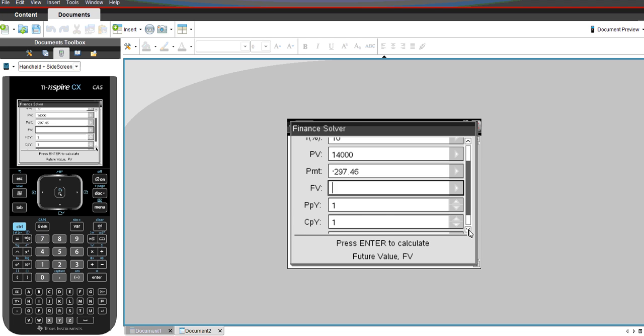The future value is what we're interested in. Now, the payments per year, in this case they're fortnightly, so there's 26. We tab that, the compounding periods per year is also 26. We hit our return on our future value, and we see that we have an amount outstanding of $4,613.